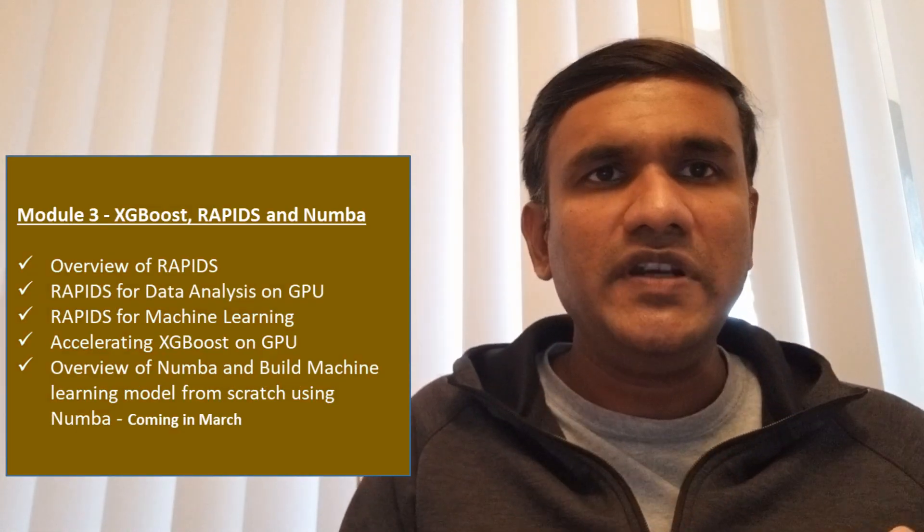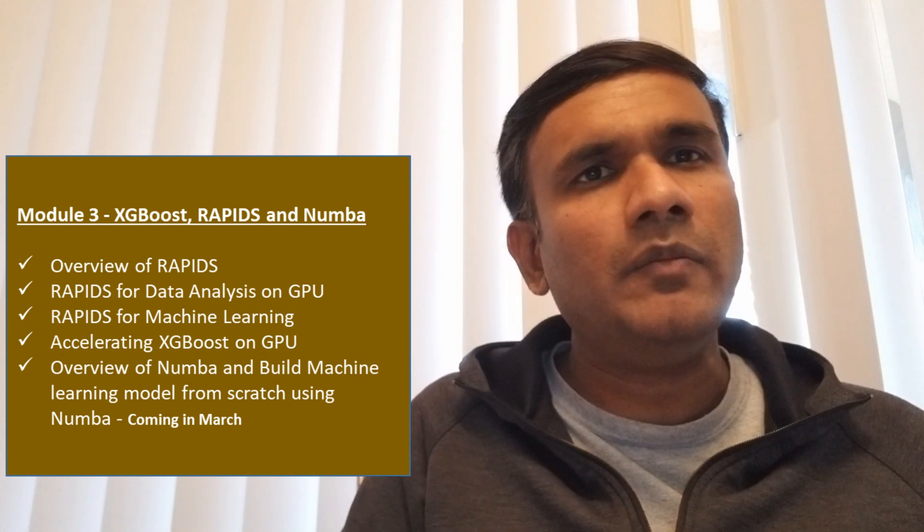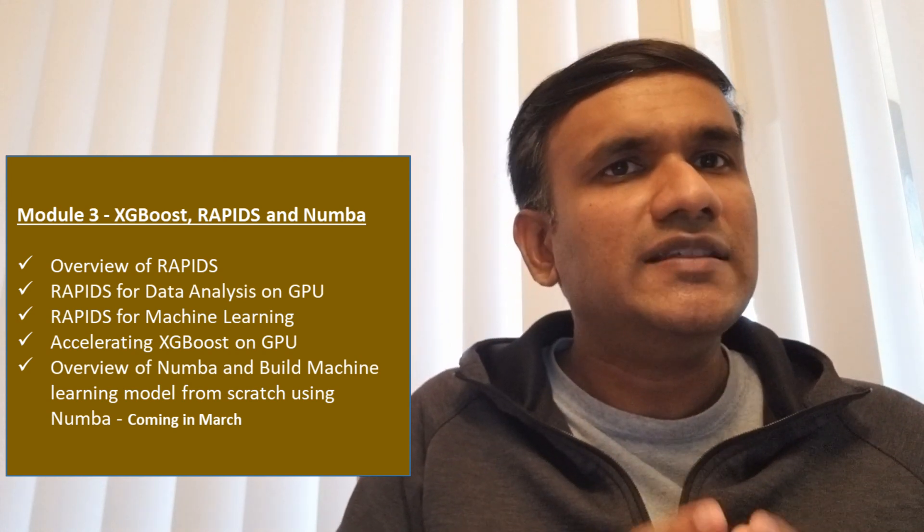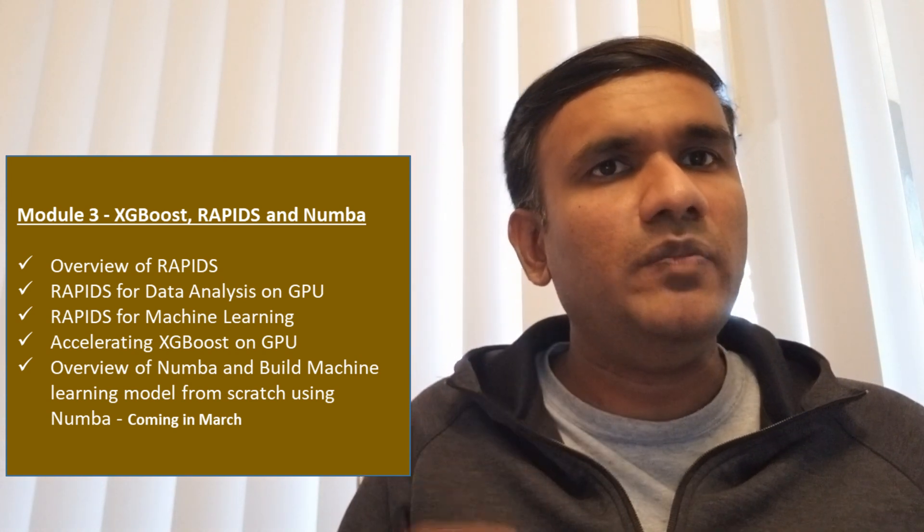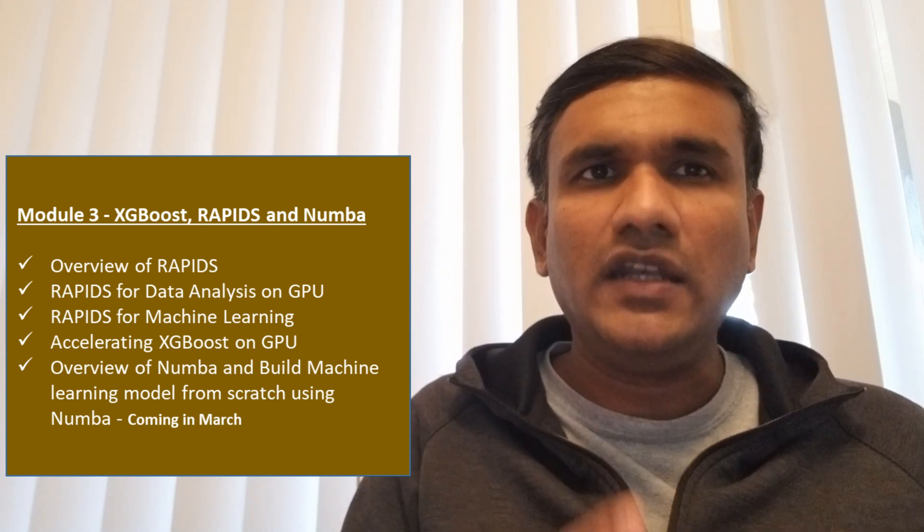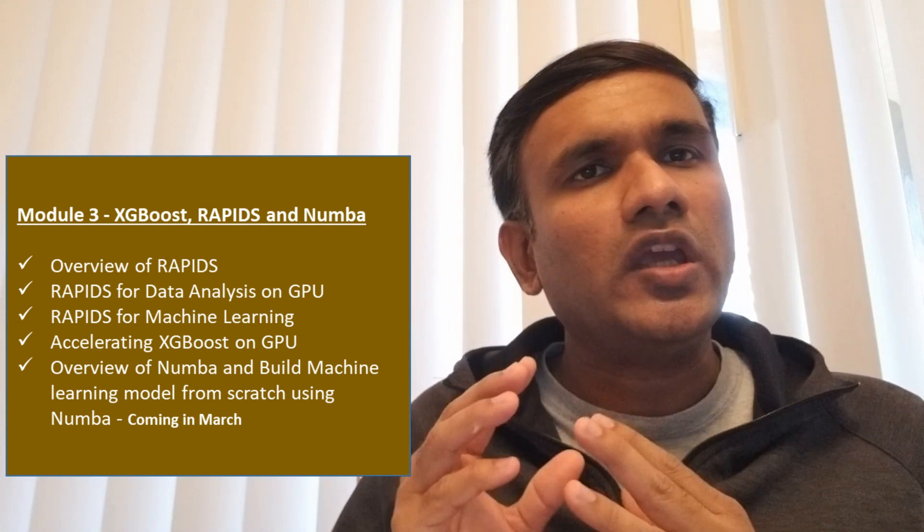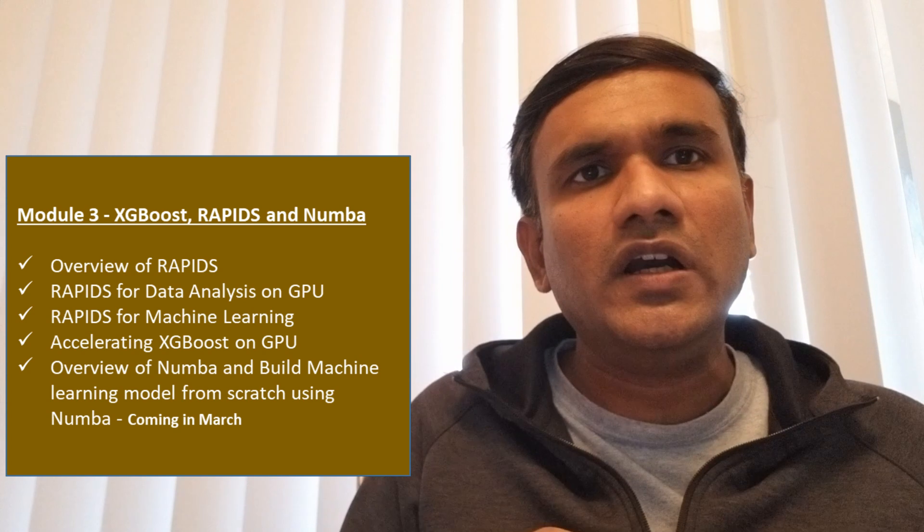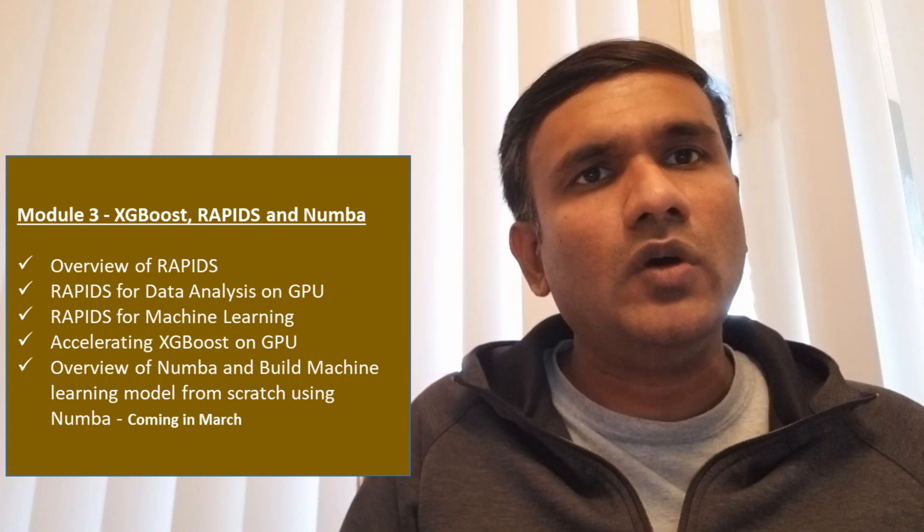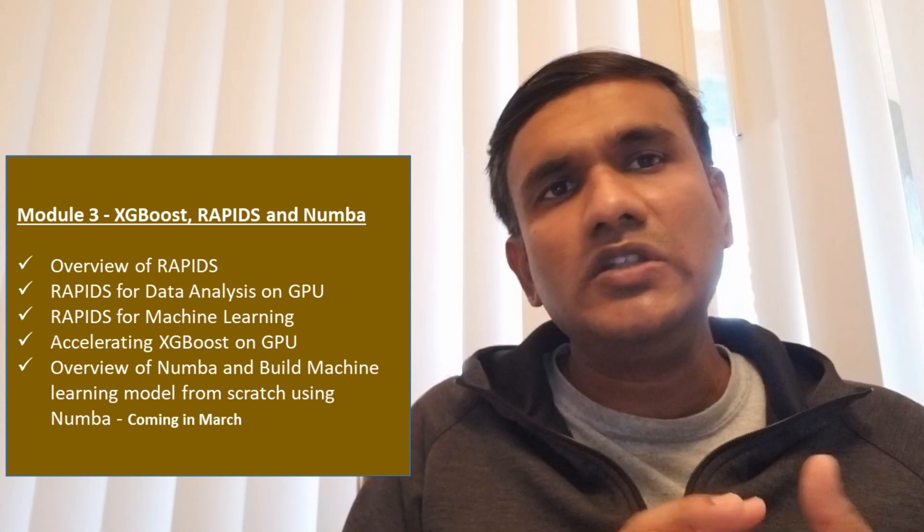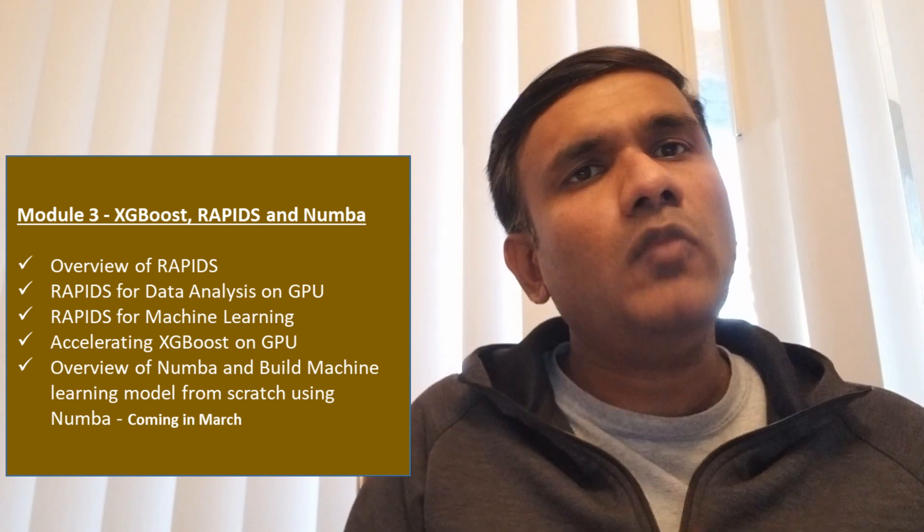The third module is about scaling XGBoost using RAPIDS, which is a new framework that is coming up to scale your machine learning pipelines on GPUs. It is a replica of scikit-learn. And then we will be also talking about Numba, which is a framework that can accelerate your Python functions.